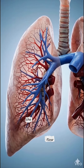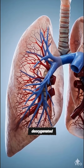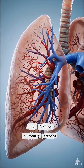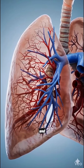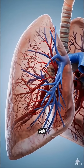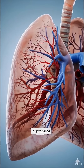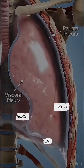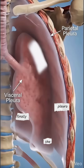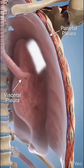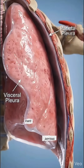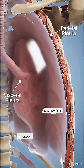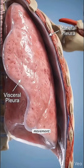Deoxygenated blood enters the lungs through pulmonary arteries, shown in blue, and returns to the left atrium as oxygenated blood. Finally, the pleura: two serous layers — visceral and parietal — allow for smooth, frictionless movement.